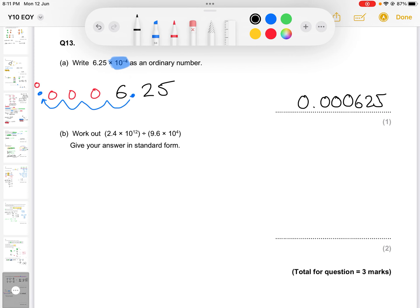Part B, work out this division sum here and give your answer in standard form. Now, technically, because this is a calculator paper, you could just type that all into your calculator in one go.